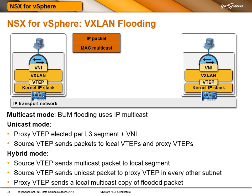In unicast mode, for every layer 3 segment NSX elects one of the hypervisors to act as the proxy flooding node. The source node replicates the packets and sends them to other hypervisors on the same segment, then sends a copy to every proxy VTAP in every other segment, and those proxy VTAPs replicate the packets within their segments. This is essentially emulated multicast with intra-subnet source-based flooding followed by flooding to all other subnets.